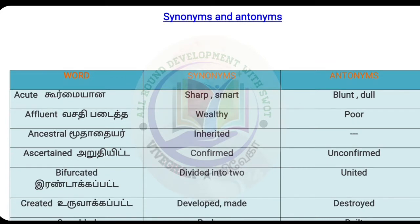Word number 1: Acute. Acute means sharp, smart. Antonyms of acute are bland and dull. Sharp — opposite: bland. Smart — opposite: dull.